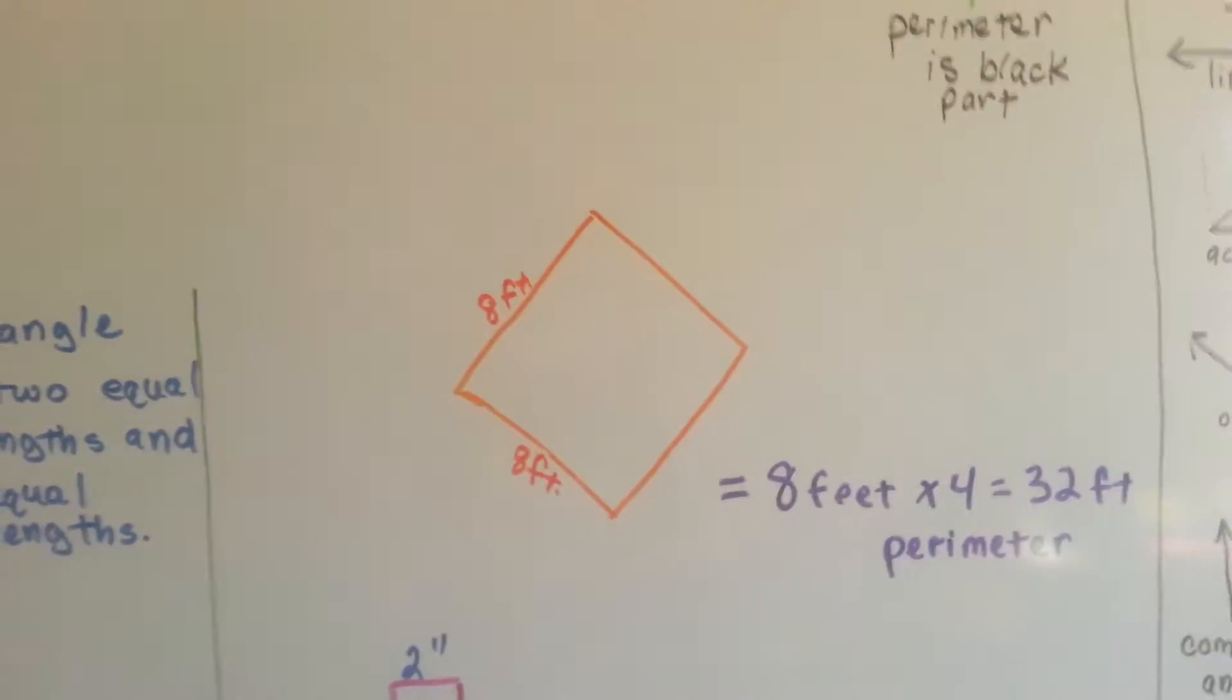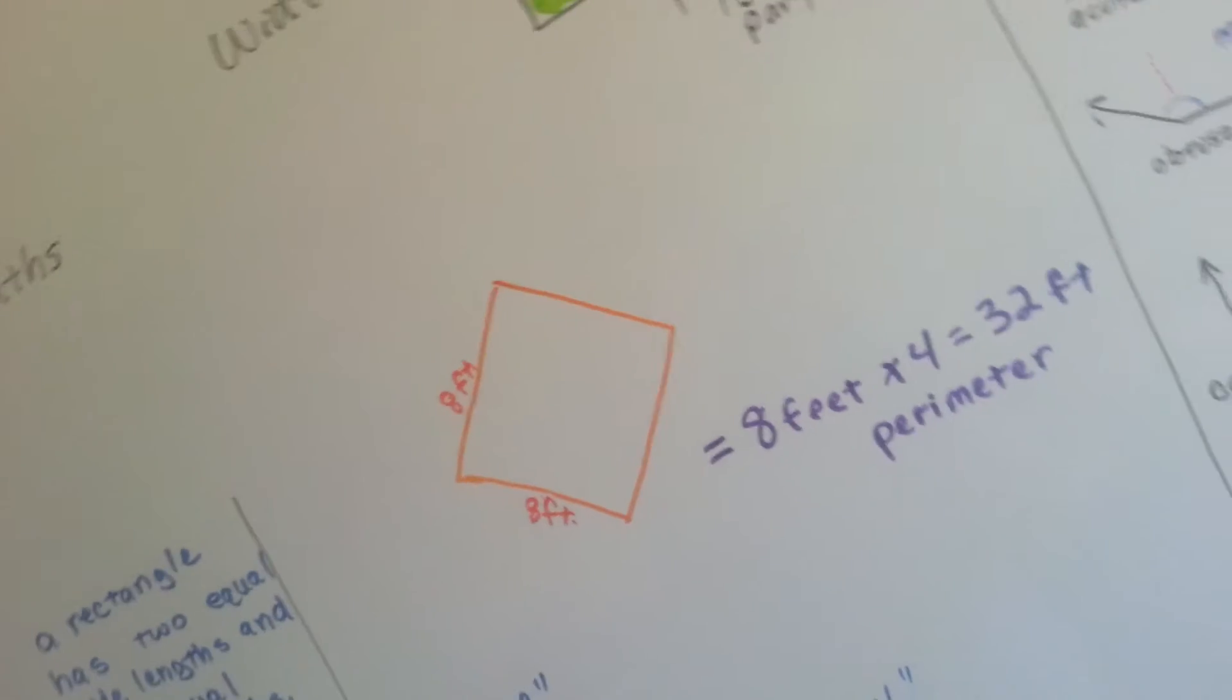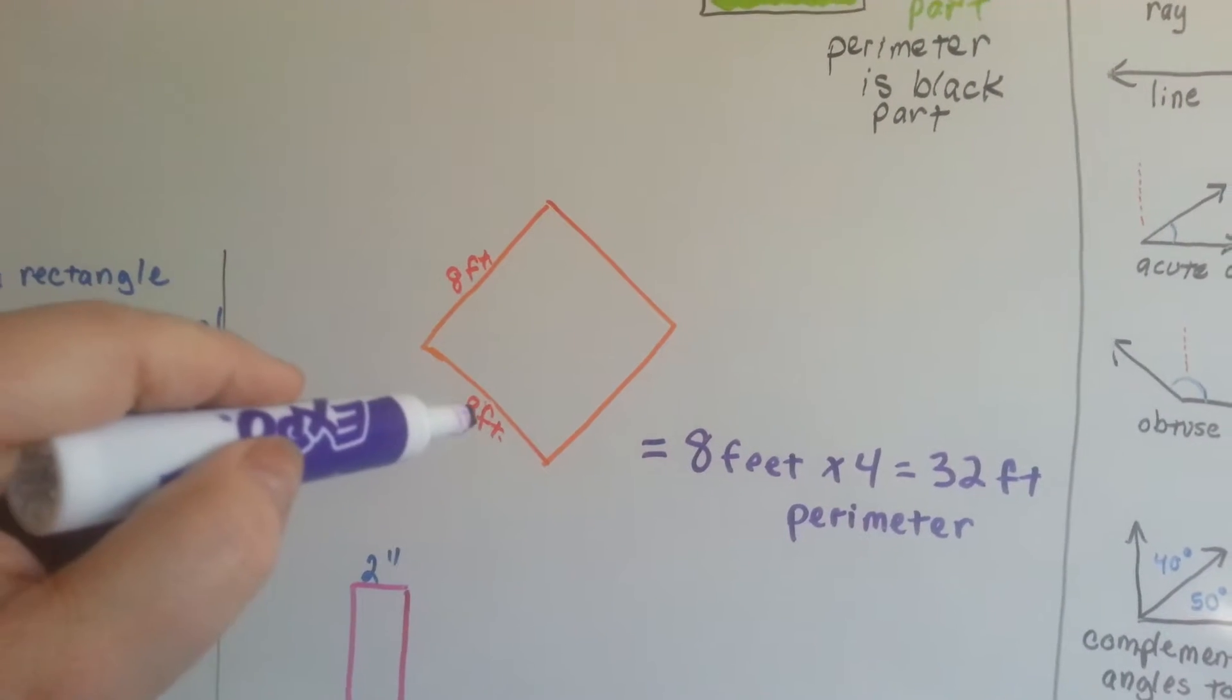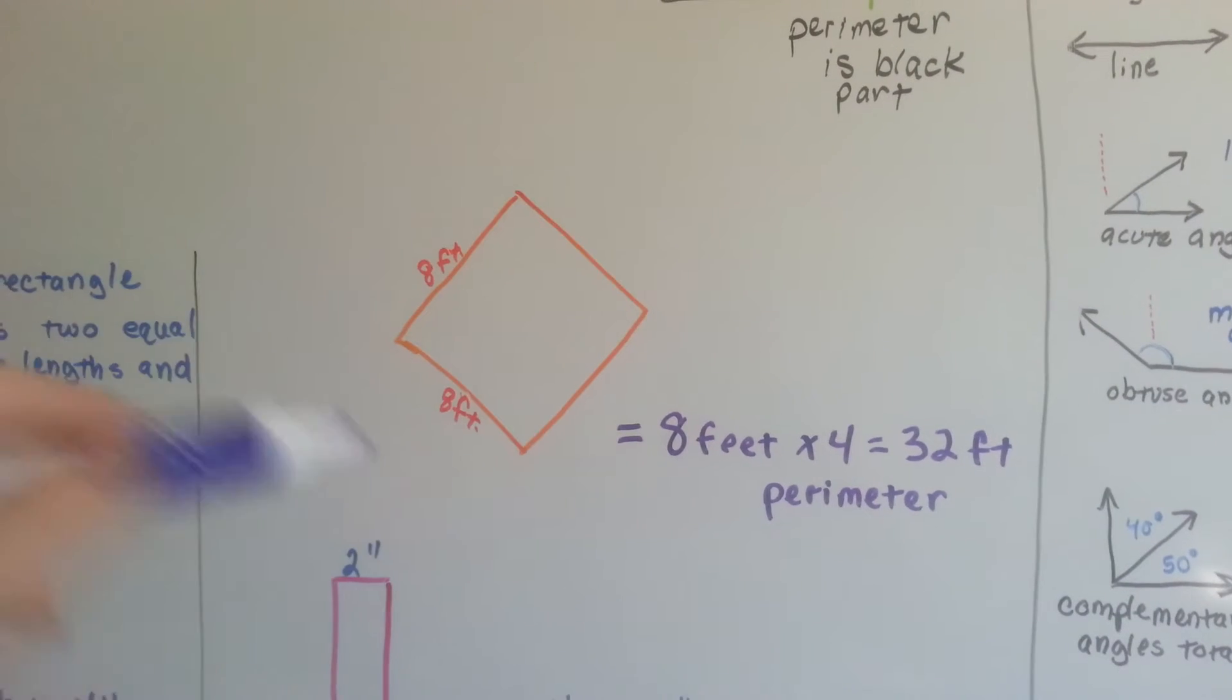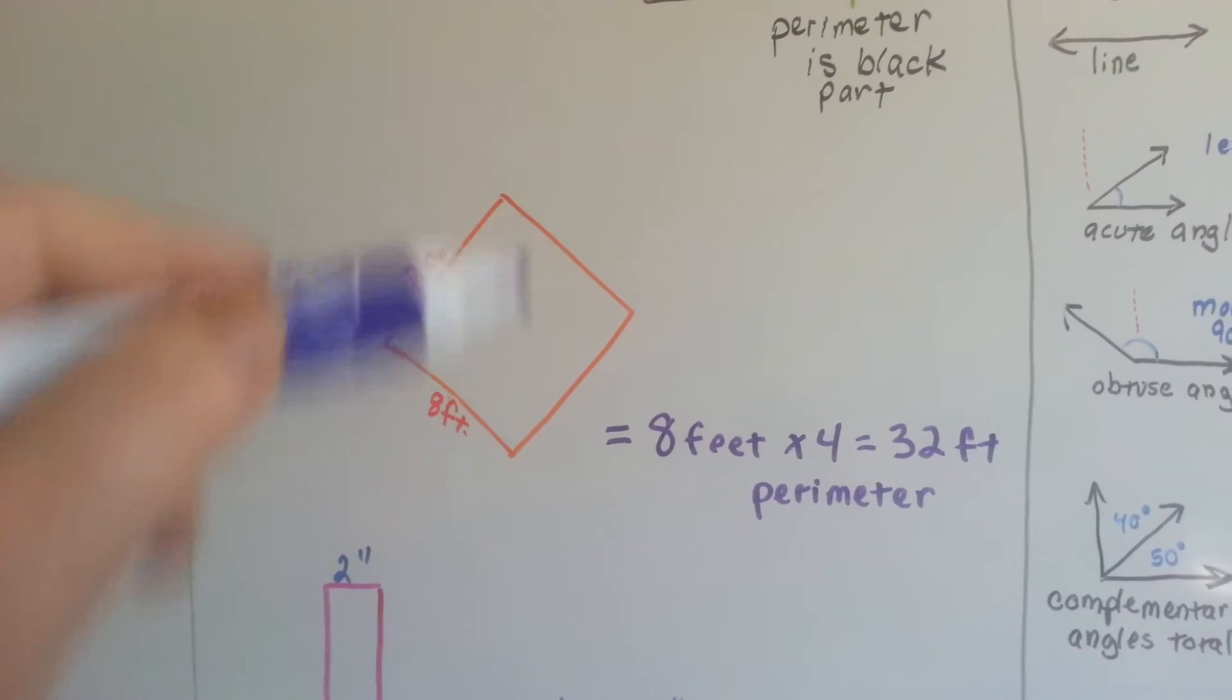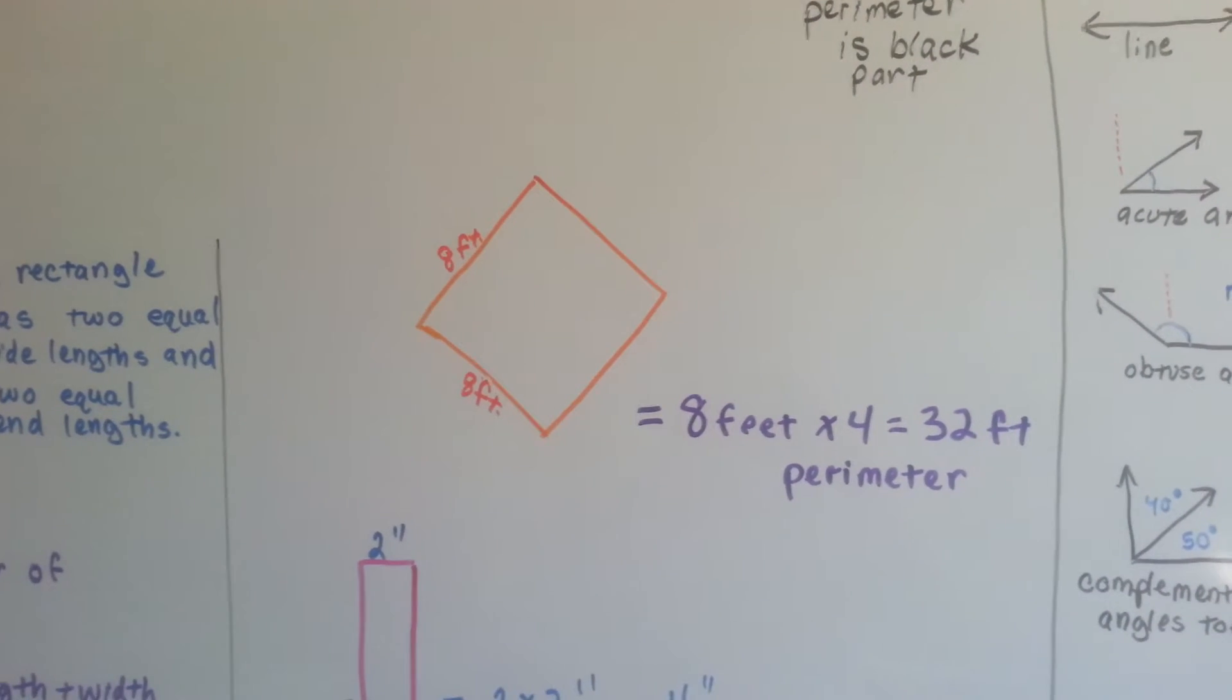So here we have a shape. When we look at it, it looks kind of like a diamond, but you know, if we tilt our head, we can see that it's a square. So it says that this side is 8 feet and this side is 8 feet. Well, we know that they have to be 8 feet because if this side is 8 and this side is 8, and it's a square, those have to match, right? So we multiply 8 times 4 and we get 32 for our perimeter.